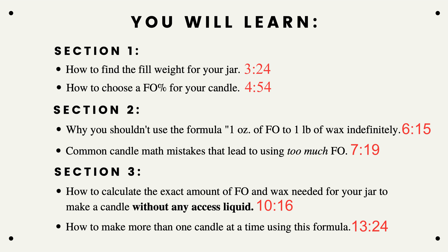I broke it up into three different sections. Section one is going to go over some vocabulary, how to find the fill weight for your jar, and how to choose the fragrance oil percentage for your candle. Section two covers why you shouldn't use the formula one ounce of fragrance oil to one pound of wax indefinitely, plus common candle math mistakes. Section three covers the formula for calculating the exact amount of fragrance oil and wax needed, and how to use that formula to make more than one candle.